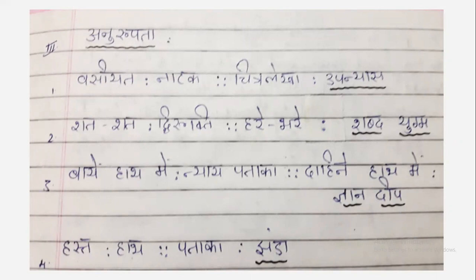Second one: shat shat — dvirukti; hare bhare — shabd yugam. Shat shat is a two-word combination, the same word said twice. When we use words like shat shat, bar bar, or koti koti, these words come under dvirukti. Shabd yugam is a combination of words used to enhance the poem or sentence, for example sukh sampatti, dhan dham, or hare bhare van upavan.